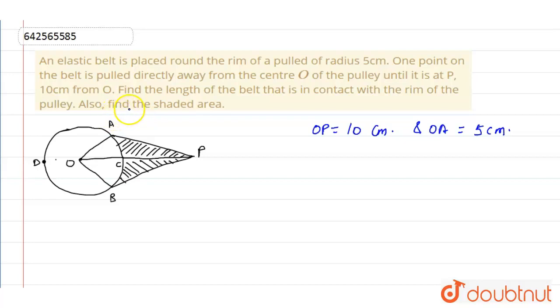Find the length of the belt that is in contact with the rim of the pulley and also find the shaded area, this is our shaded area APB. Now we know that the tangent of a circle is perpendicular to the radius of the circle through the point of contact, so angle OAP is equals to 90 degree.